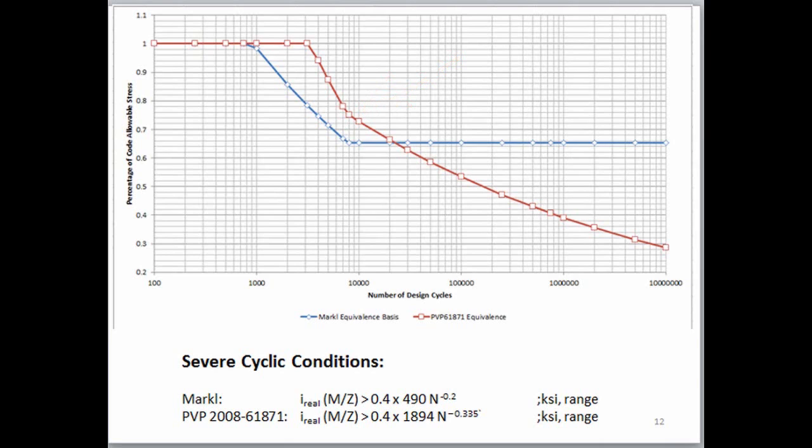Let's look at it more simply. At 100,000 cycles, when the stress is 54% of the B31-3 allowable, you are in an equivalent severely cyclic condition.